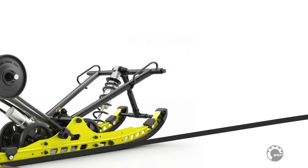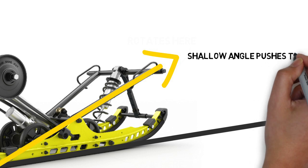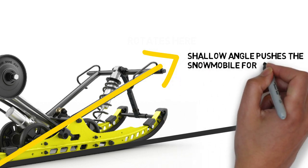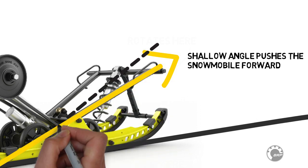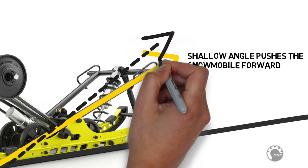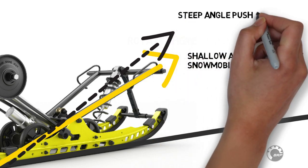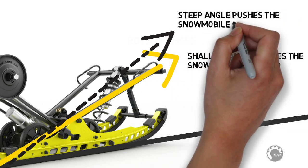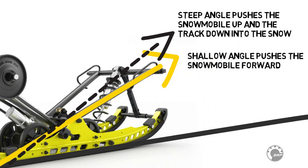A more shallow angle of the front arm to the slide rail results in more of the force from the track pushing the snowmobile forward. A steep angle between the front arm and the slide rail lifts the snowmobile instead of moving it forward. Similarly, a steeper angle of the front arm pushes the track into the snow with more force, giving more traction.